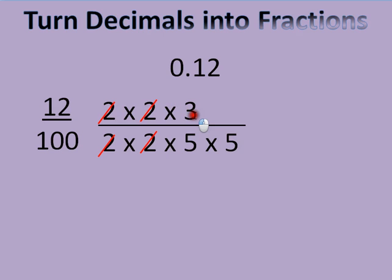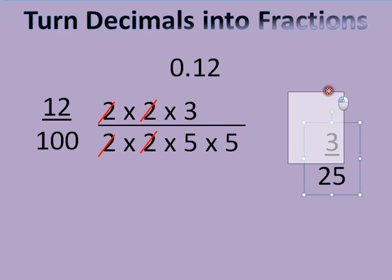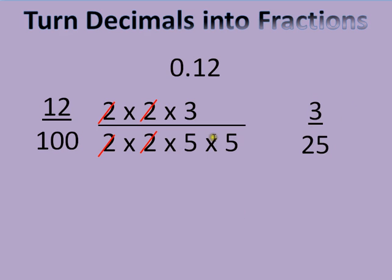well, I multiply them to get my new fraction. So three, well, there's nothing to multiply it by, so it just stays three. And what's left is five times five. Well, five times five is twenty-five. So, twelve hundredths is the same as three twenty-fifths. You could also look, since I have a two times two in both the top and the bottom, I could divide twelve and one hundred by two times two, which is four.